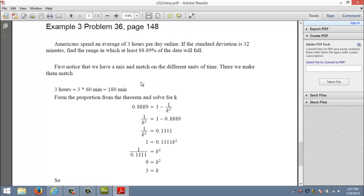Let's see what's going on. Three hours a day online, we have some mixing and matching of time because three hours and I've got here 32 minutes. So I make everything in terms of minutes. Three hours is 3 times 60 or 180 minutes. First I got to figure out what k would give me this 0.8889. So I have to solve this for k. With a little manipulation you get that k is 3.